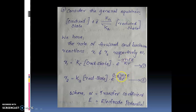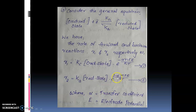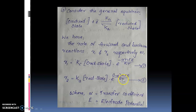Here, alpha is the transfer coefficient and E is the electrode potential. F is the Faraday constant, n is the number of electrons involved, R is the gas constant, and T is the temperature.